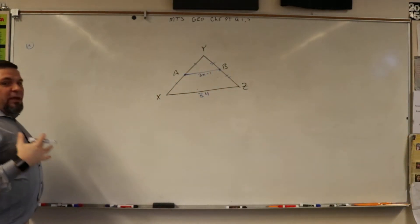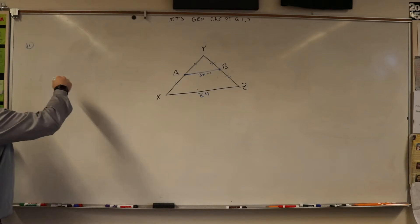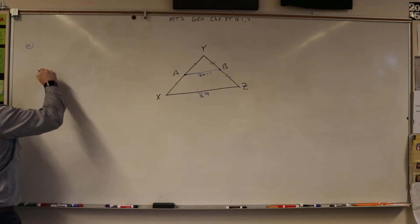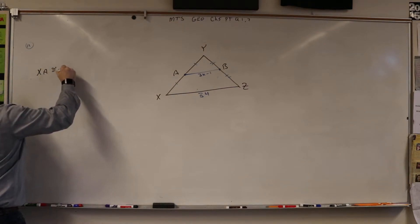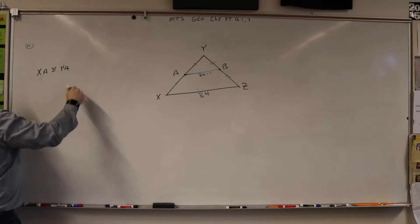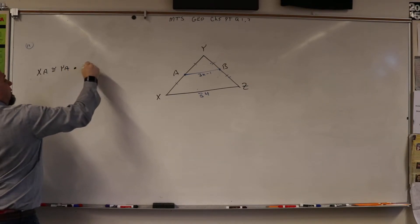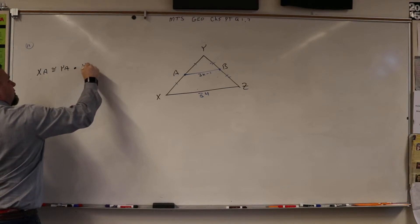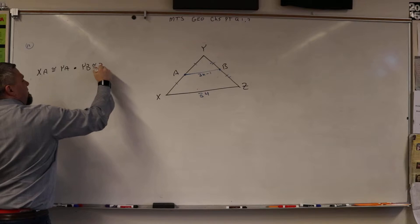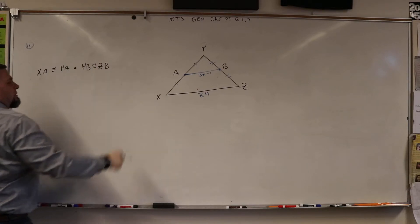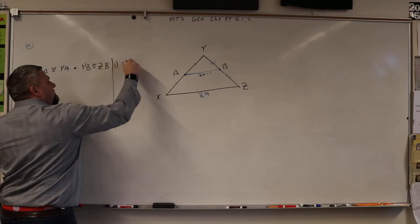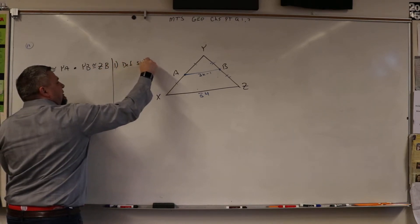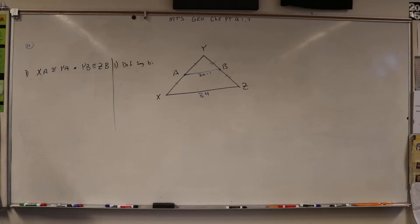So it's basically saying that XA and YA are congruent. And YB is congruent to ZB. And that's the definition of a segment bisector.